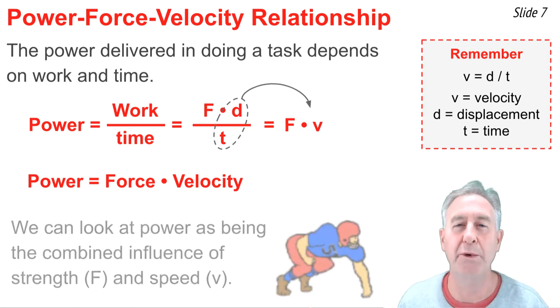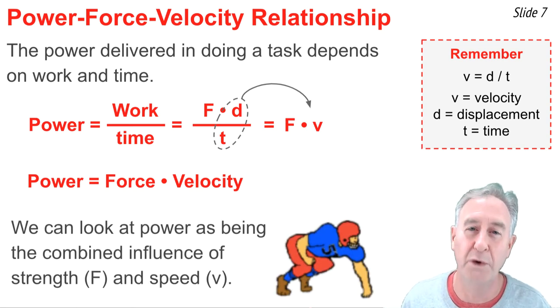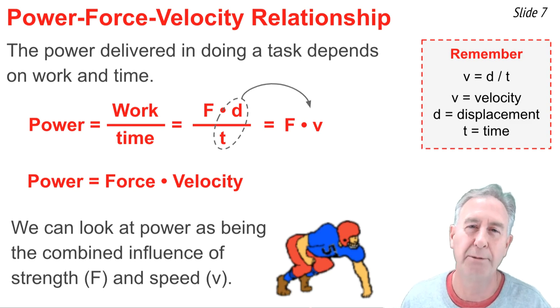So, when it comes to a power rating, we can begin to think of it as being the combined influence of force and velocity. If we apply a power rating to a football player, we might say that the lineman with the greatest power is the one that has the greatest strength, applies the greatest force, and the greatest speed.